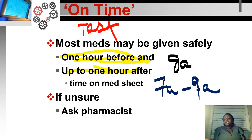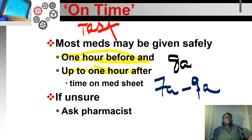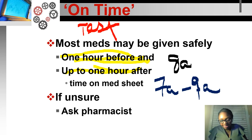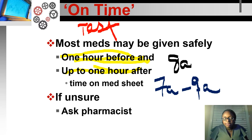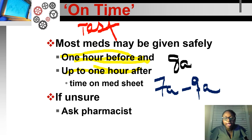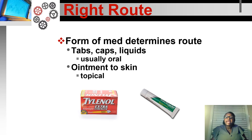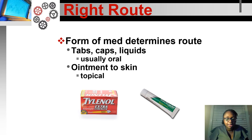That two-hour window exists because if everyone's meds are scheduled for 8 a.m., you can't give five people their medications at exactly 8:00, and a hospital floor can't be in all rooms at once. If there's an issue or you're unsure, ask the pharmacist.